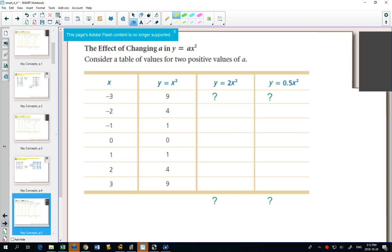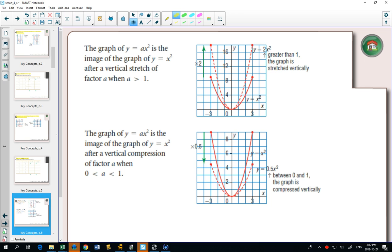Next thing to highlight is what happens if there's a number in front. Well, if the number is bigger than 1, like 2x squared, it gets narrower. And one thing we might want to put, when a equals 1, it goes like over 1, up 1, over 1, up 3, over 1, up 5.